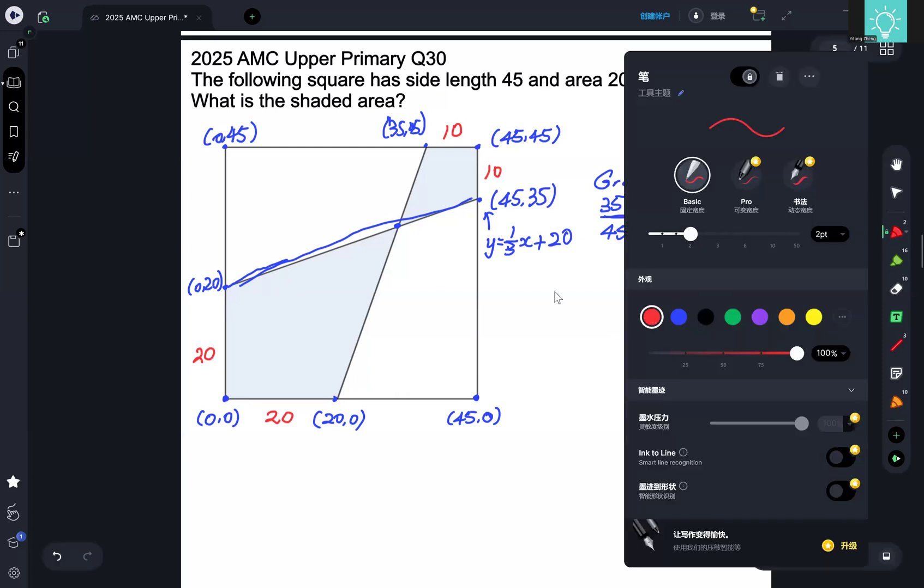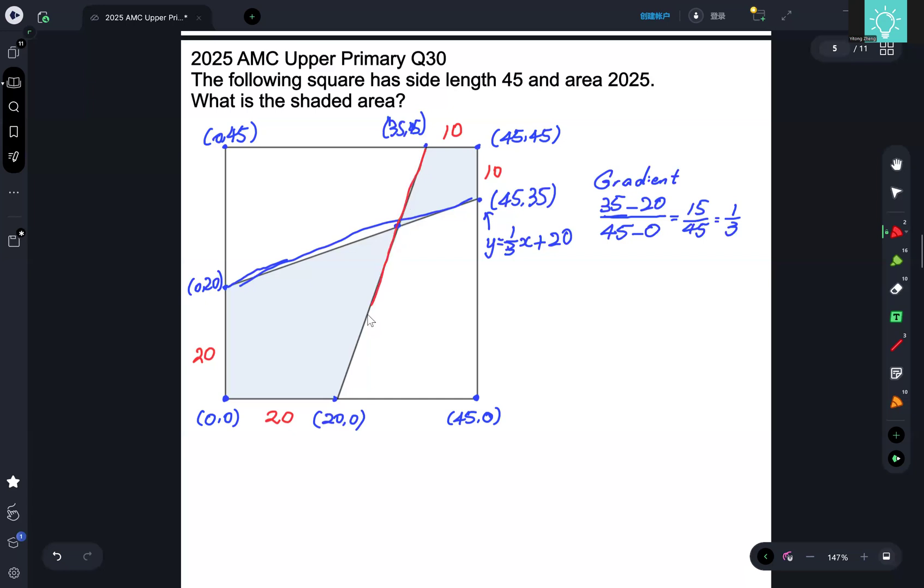Now we look at this line across here. The gradient of this line, the rise went from 45 to 0, and the y value went from 35 to 20. So the gradient is 45 over 15, which is 3.